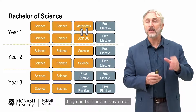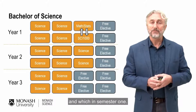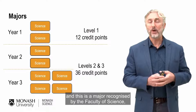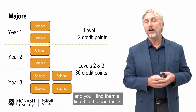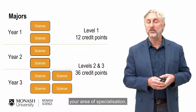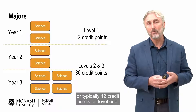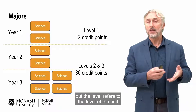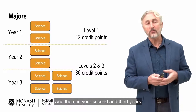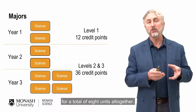As indicated by the arrows, those can be done in any order — it doesn't matter which you do in semester one or semester two. As part of your Bachelor of Science, you need to complete a major recognised by the Faculty of Science, listed in the handbook. A major is your area of specialisation. Over three years, you'll take two units — typically 12 credit points — at level one, and then in your second and third years a total of 36 credit points, comprising the major for a total of eight units altogether.